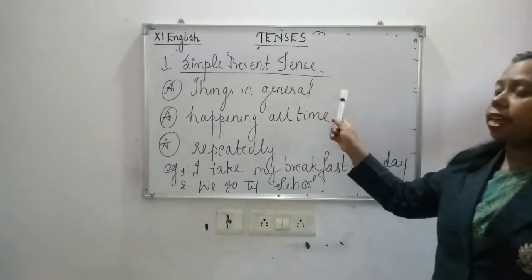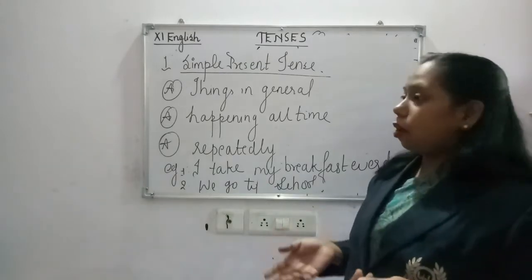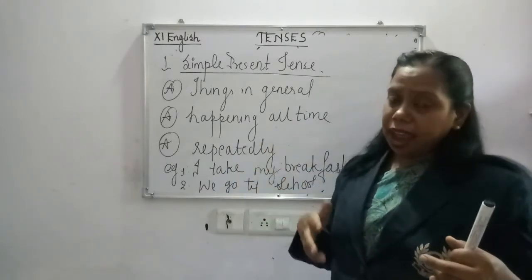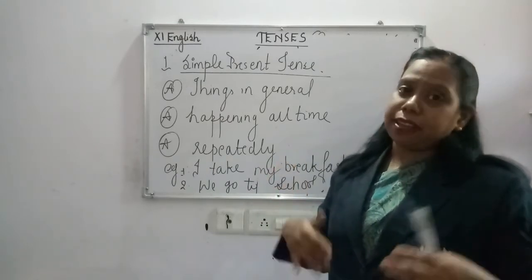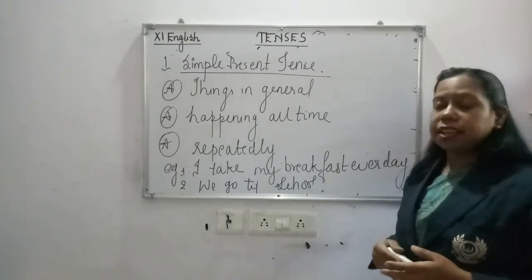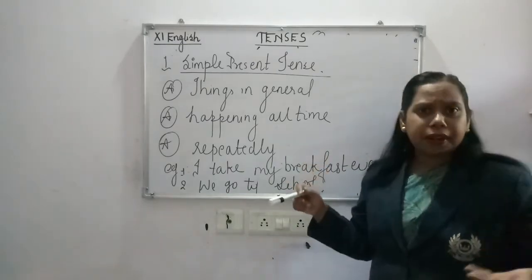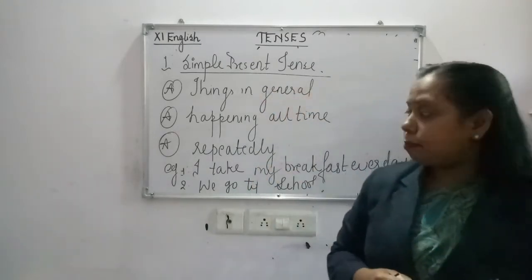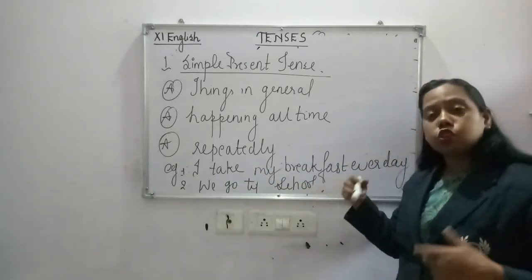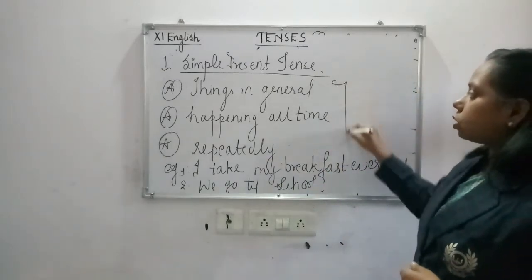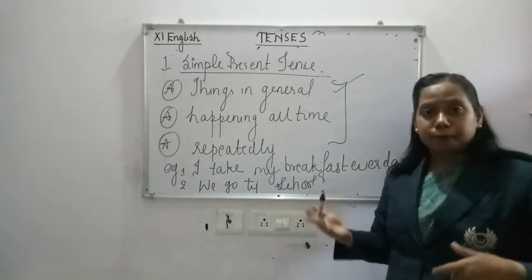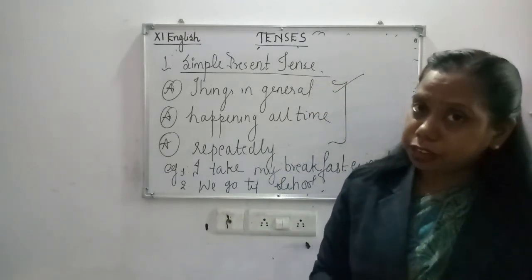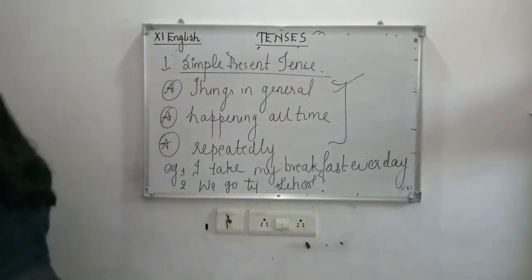Simple Present Tense is about things which are in general — it is happening all the time. It is not necessary that the action is actually being done at the time when you speak. It is a repeated type of action which keeps repeating every day. For example: 'I take my breakfast every day' and 'We go to school.' These are general, repeated actions not necessarily happening at the exact time of speaking.